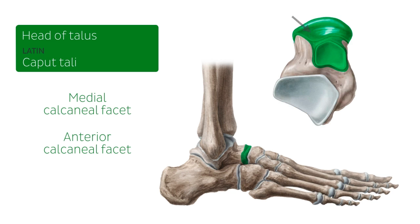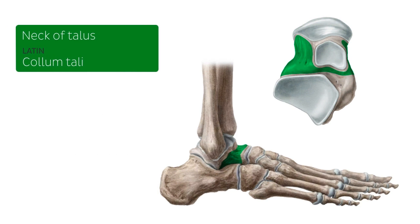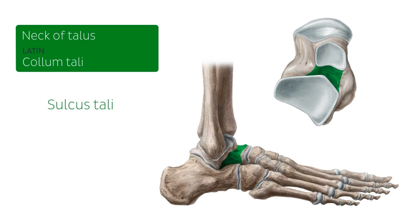The neck of the talus connects the head and body, and as we can see it is somewhat narrow, presenting a rough surface for ligament attachments. The deep sulcus tali is found on the neck of the talus, and this groove forms the roof of the sinus tali when the talus and calcaneus articulate.